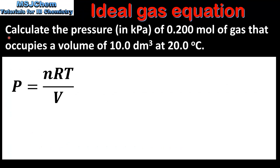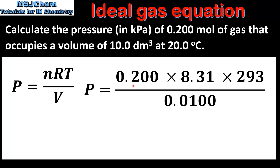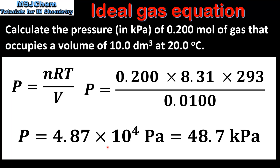In the next example we will calculate the pressure in kilopascals of 0.2 moles of gas that occupies a volume of 10 cubic decimeters at 20 degrees C. We will use the pressure equation. The amount in moles is 0.2, the universal gas constant is 8.31, and the temperature in kelvin is 293. We multiply these together and divide by the volume in cubic meters. This gives a pressure of 4.87 times 10 to the 4 Pascals. To convert from Pascals to kilopascals we divide by 1000, which gives us 48.7 kilopascals.